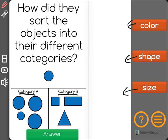Let's start with color. Did they sort these into different categories because they have different colors? The answer to that is no, because as you can see, the shapes in Category A and in Category B are the same color. What about shape?